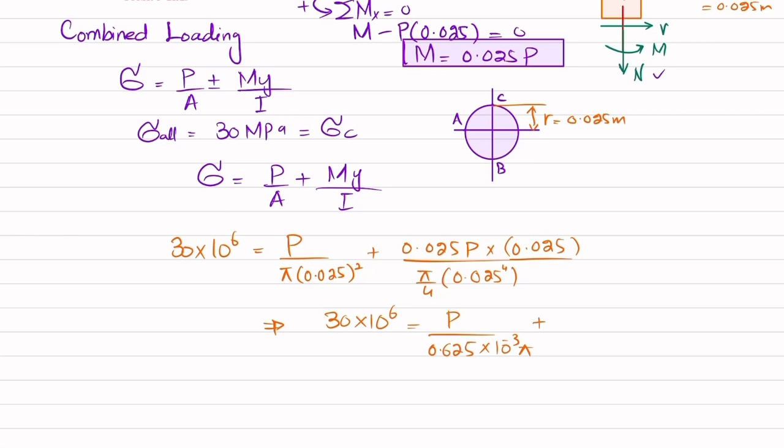Plus 0.025 squared times P divided by 97.6562 times 10 raised to power minus 9 times pi. So when you solve this you will get at the end P will be equal to 11.8 kilonewtons, which is the answer of this problem. I hope you will be able to solve this.